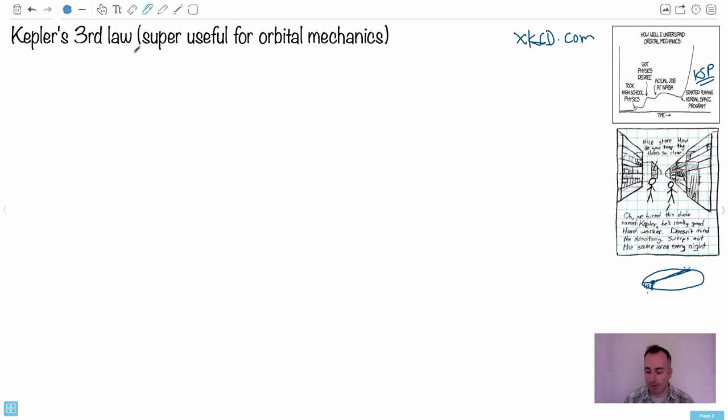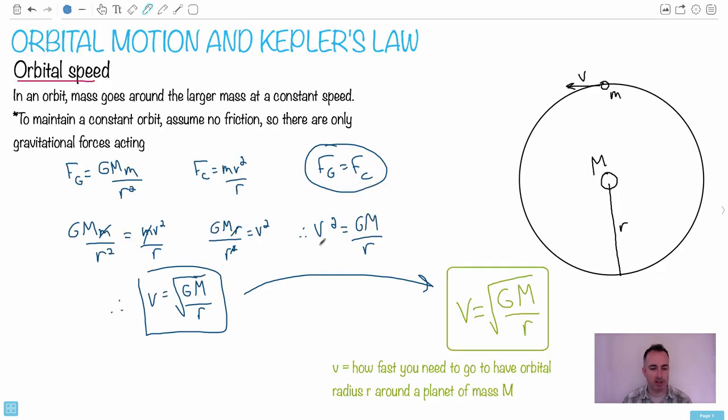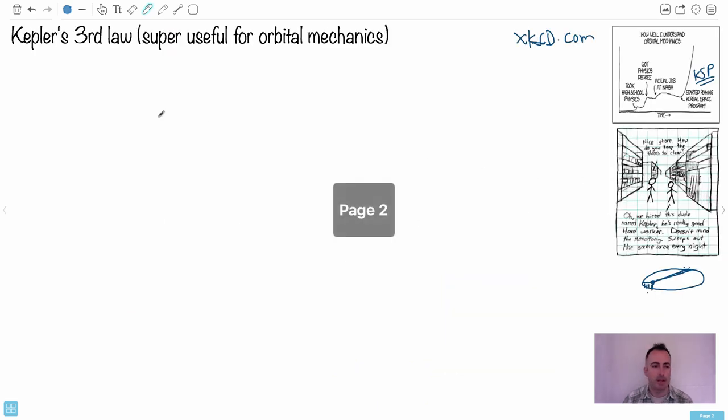Kepler's third law, you don't formally need to know it but I think it's nice to know. Let's start off with this equation right here. Let's go back to this: v squared equals GM over r. Let's look at that one. So we'll start with that. So v squared equals GM over r. This time instead of v, let's use, we used this before, let's use that v is the distance over time.